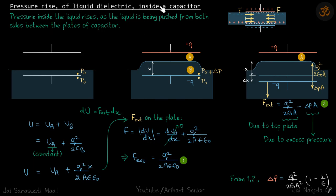Pressure rise of liquid dielectric inside a capacitor. We have already seen that if you try to push a dielectric inside a capacitor, it's going to be pulled inside from either side. So if you submerge the capacitor inside a liquid, the liquid which acts as a dielectric will be pushed inside from both sides. That will give rise to pressure between the plates. The liquid here will have a higher value of pressure than the liquid at the same height outside. Pressure inside the liquid rises as the liquid is being pushed from both sides between the plates of the capacitor.